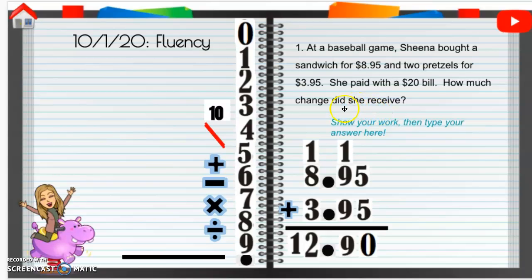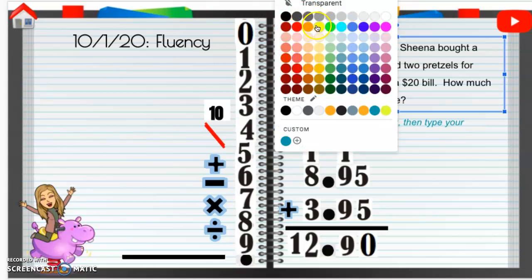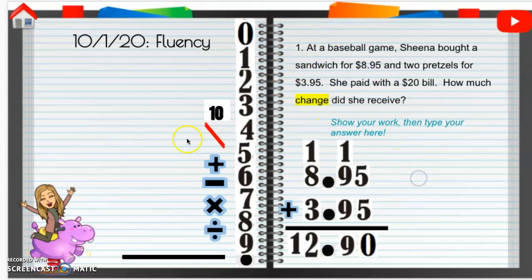So the change, that means we're going to do what? Oh, we're going to subtract! So we're going to subtract. So we're going to do $20, because that's what she's paying with. I'm going to do that over here, since we have a little more room over here. So $20, how can we write $20 as a decimal?